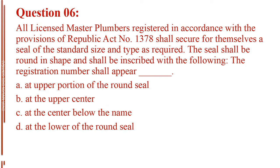Question number 6. All licensed master plumbers registered in accordance with the provisions of Republic Act number 1378 shall secure for themselves a seal of the standard size and type as required. The seal shall be round in shape and shall be inscribed with the following: the registration number shall appear blank. Letter A, at upper portion of the round seal. Letter B, at the upper center. Letter C, at the center below the name. Letter D, at the lower of the round seal.